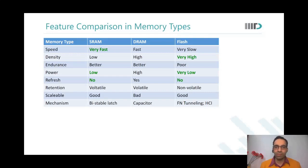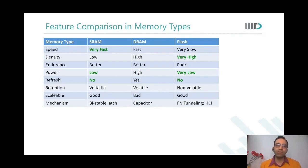Let's have a quick look at how SRAMs, DRAMs, and flash compare on various access parameters. SRAMs are very, very fast — they have access times on the order of hundreds of picoseconds in advanced technologies. DRAMs are fast, with access times on the order of tens of nanoseconds. Flash is much slower; if you want to access flash, the access time is on the order of a few microseconds.